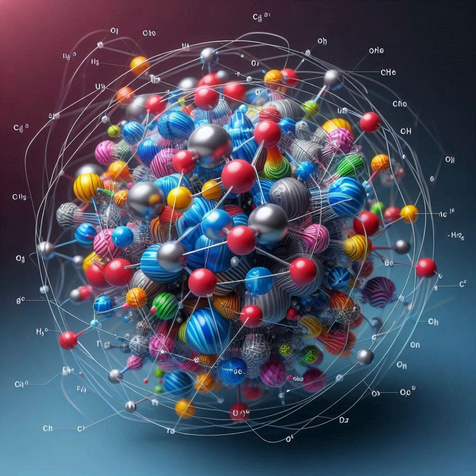Covalent bonds and molecular magnetic fields. Molecular structure: Covalent bonds determine the three-dimensional structure of molecules. This structure influences the distribution of electrons and, consequently, the magnetic fields generated by the molecules.